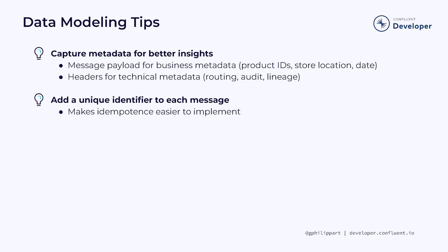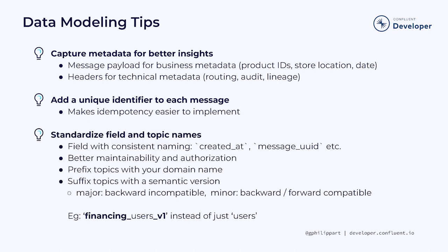We'll discuss idempotency in greater detail later when we discuss the application layer. Lastly, try to standardize fields and topic names. It's important to prefix topics with your domain name — this helps create a clear and unique namespace for your topics, avoiding conflicts and confusion. For example, you might use 'financing_users_v1' instead of just 'users'. If you do that, it will be very straightforward to aggregate two clusters together or set up topic mirroring the day you need it. Consistency in naming not only helps improve readability and maintainability of your code and data schemas, it will also make authorization simpler later on.